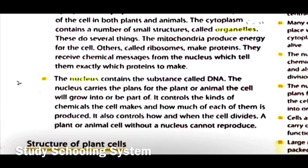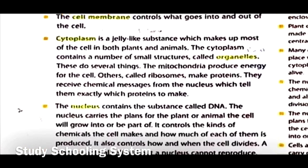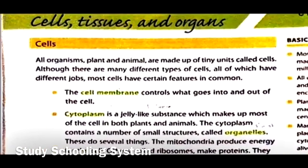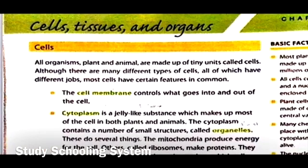'The nucleus contains a substance called DNA. The nucleus carries the plans for the plant or animal the cell will grow into or be part of. It controls the kinds of chemicals the cell makes and how much of each is produced. It also controls how and when the cell divides. A plant or animal cell without a nucleus cannot reproduce.'